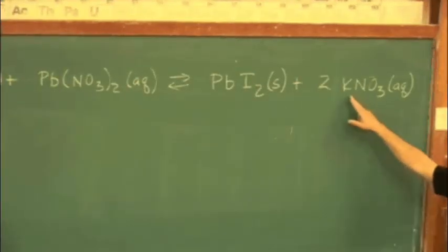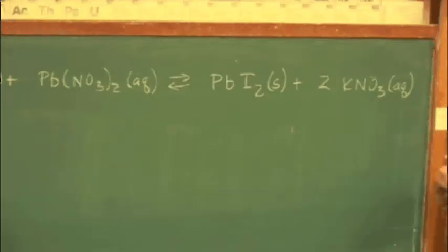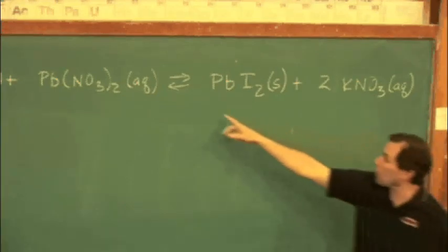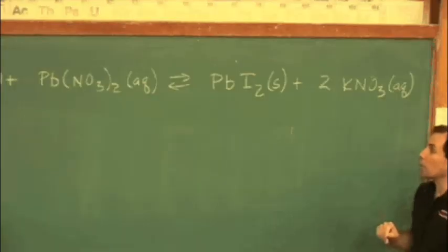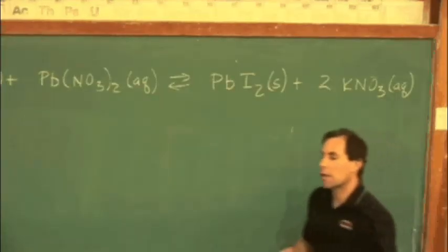We have a couple of spectator ions, some K plus and some NO3 minus, indicated by aqueous. These are not going to come together, but they're going to continue to float. I've put forward and reverse arrows here. This system is definitely going to be in equilibrium. Let's take a look at the demo.